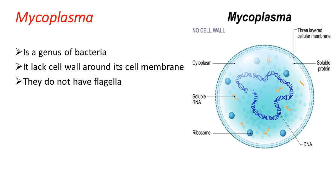One character that can be seen in mycoplasma is it does not consist of a cell wall. We have seen that eubacteria will have a rigid cell wall, but mycoplasma does not. Instead, the cell membrane acts as the outermost boundary, providing protection to the organism.